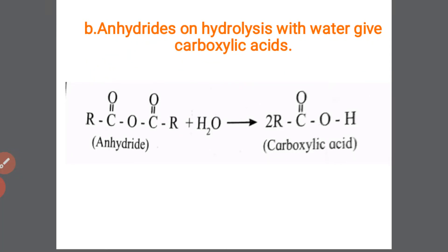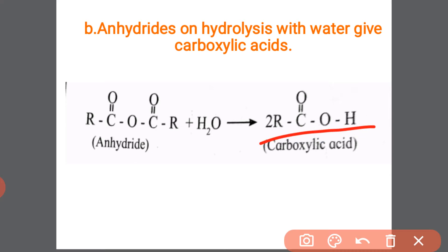The second method under this section is hydrolysis of anhydrides with water to give carboxylic acid. The general formula of anhydride is R–C(=O)–O–C(=O)–R. When we treat this anhydride with water, it forms two molecules of carboxylic acids.